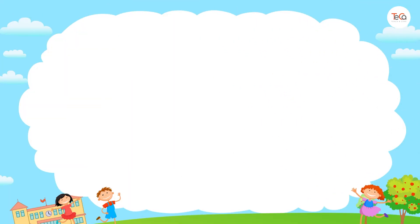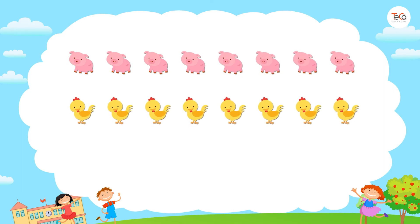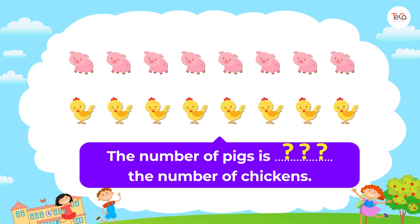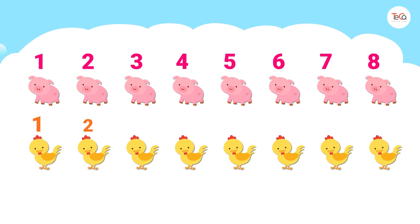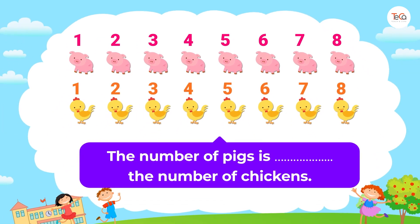Now we have a number of pigs and chickens. The number of pigs is ___ the number of chickens. Hmm, what do you think? Here we have one, two, three, four, five, six, seven, eight pigs, and one, two, three, four, five, six, seven, eight chickens. So the number of pigs is equal to the number of chickens.